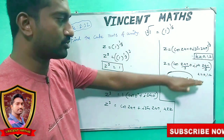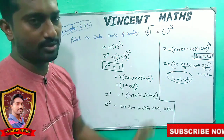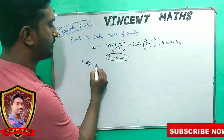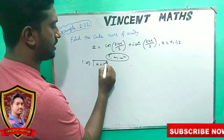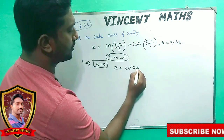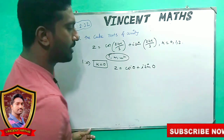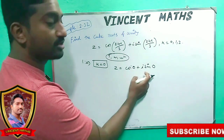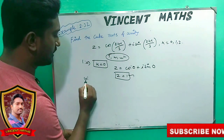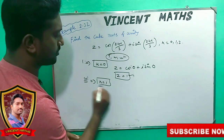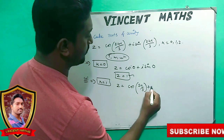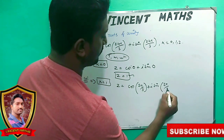What is the equation? What is the value of omega and omega squared? Taking k equal to 0, we get cos 0 plus i sin 0. The value of cos 0 is 1, sin 0 is 0, so z equals 1. This is our first value. For k equal to 1, z equals cos 2 pi by 3 plus i sin 2 pi by 3. This gives the omega value.